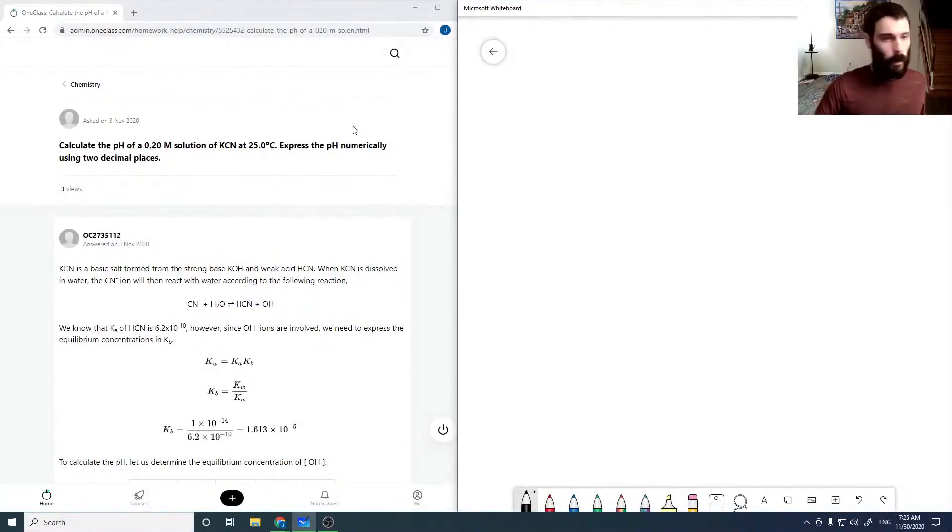Calculate the pH of a 0.2 molar solution of KCN. For this question, we're going to use the Ka for HCN equal to 6.2 times 10 to the minus 10.